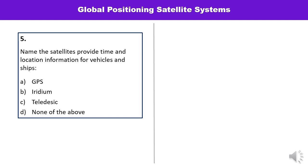Question number five: Name the satellite that provides time and location information for vehicles and ships. What is the name of that satellite? GPS — that is the correct one.